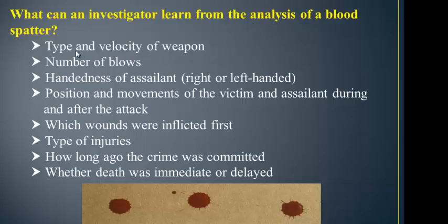What an investigator will learn from the analysis includes the type of weapon that was used, how fast that weapon was moving, the number of blows on a victim, whether the assailant was right or left-handed, how he or she was positioned over the victim, which wounds happened first, how the assailant would move around the victim, type of injuries, how long it was going depending on how it dried and on the surface, and whether the death was immediate or delayed.